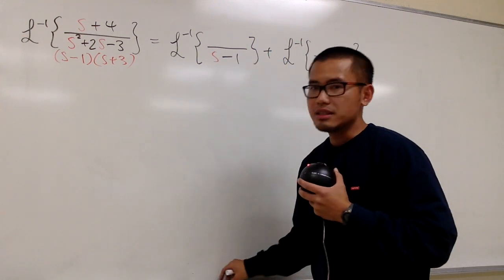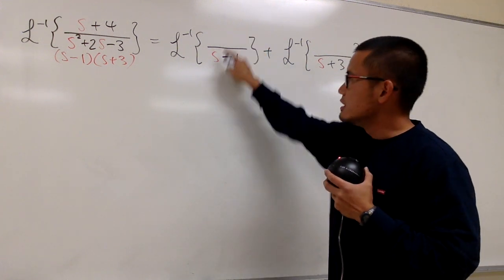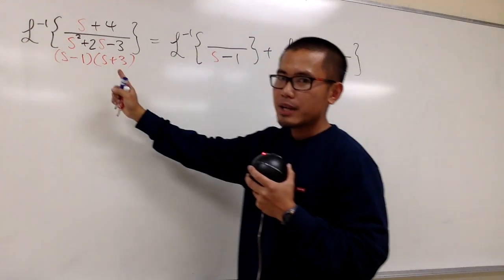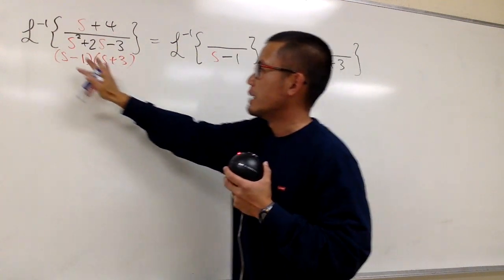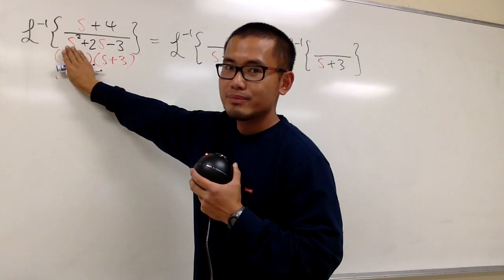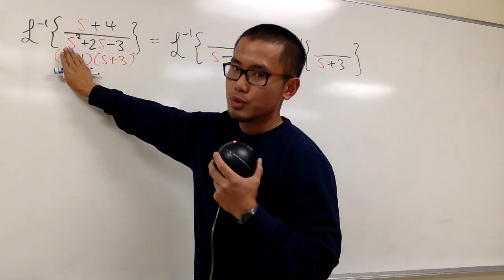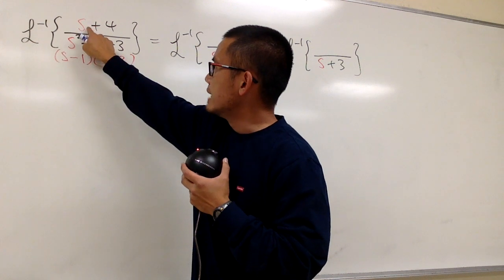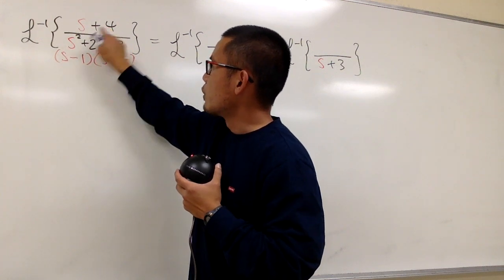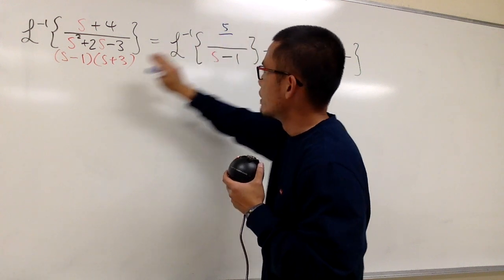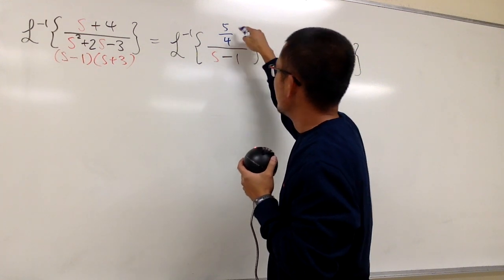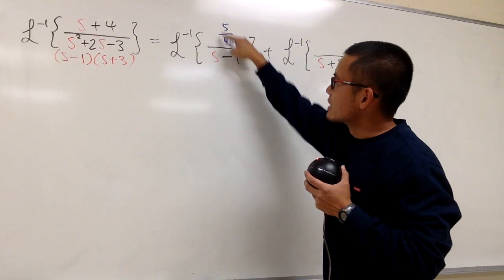Now let's figure out what the constants are. To find the first constant, the denominator is s minus 1. I'll come back to the original and cover up that s minus 1 factor. To make it equal to zero, we plug in s equals 1. So on top we get 1 plus 4, which is 5. On the bottom, 1 plus 3, which is 4. So the first constant is 5 over 4.